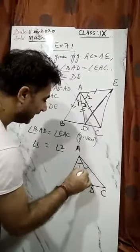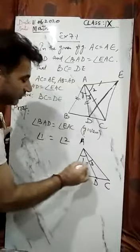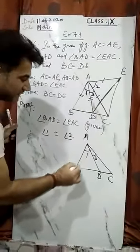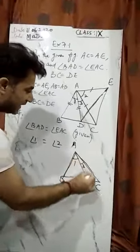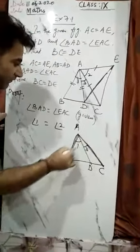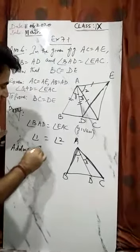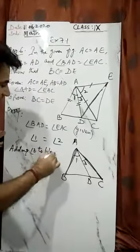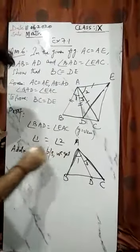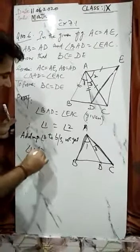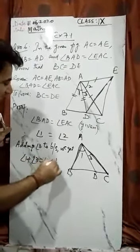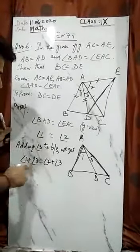If I combine angle 3 with angle 1, then the whole angle will be BAC. So adding angle 3 to both sides, we get angle 1 plus angle 3 equals angle 2 plus angle 3.